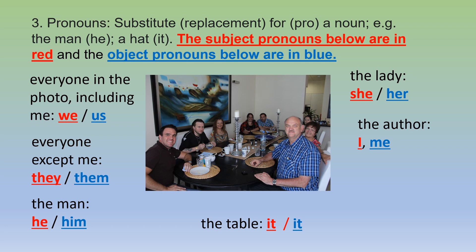Everyone except me — they; we saw them. The man — he; I met him. That's the object for the word 'he'. The table — it, for both subject and object. The lady — she sat there; we saw her. The author — I wrote this; it was written by me.